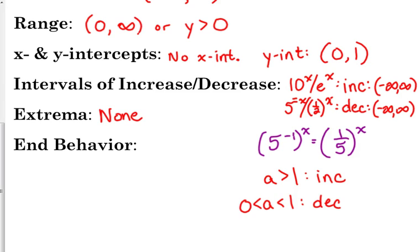And then the end behavior, we need to split those into two categories because the same thing happens. When a is greater than 1, it has a particular end behavior, and when it's less than 1, it has a particular end behavior. So remember how we split up end behavior. We said as x is approaching negative infinity and as it's approaching positive infinity, let's talk about what the y values are doing.